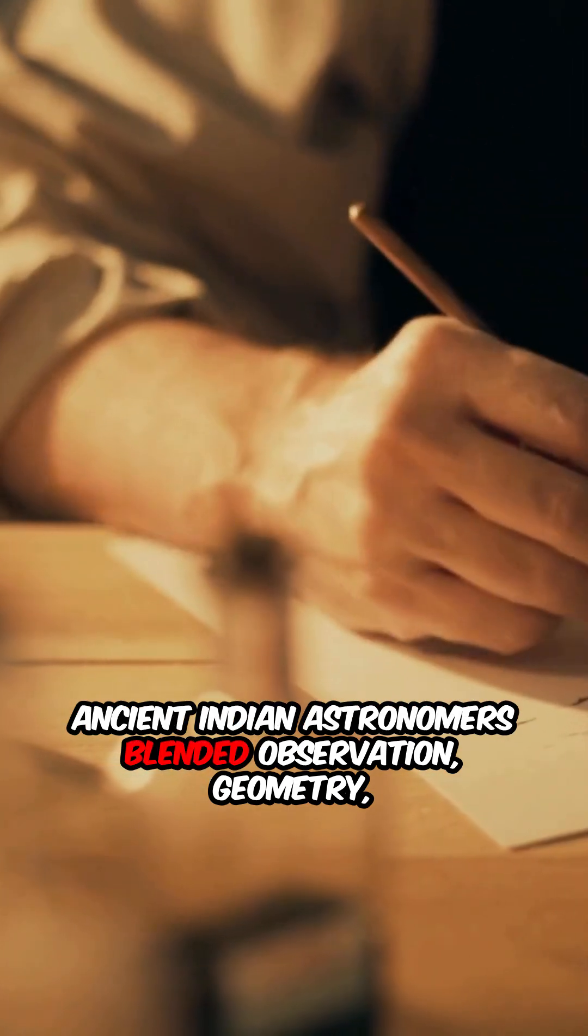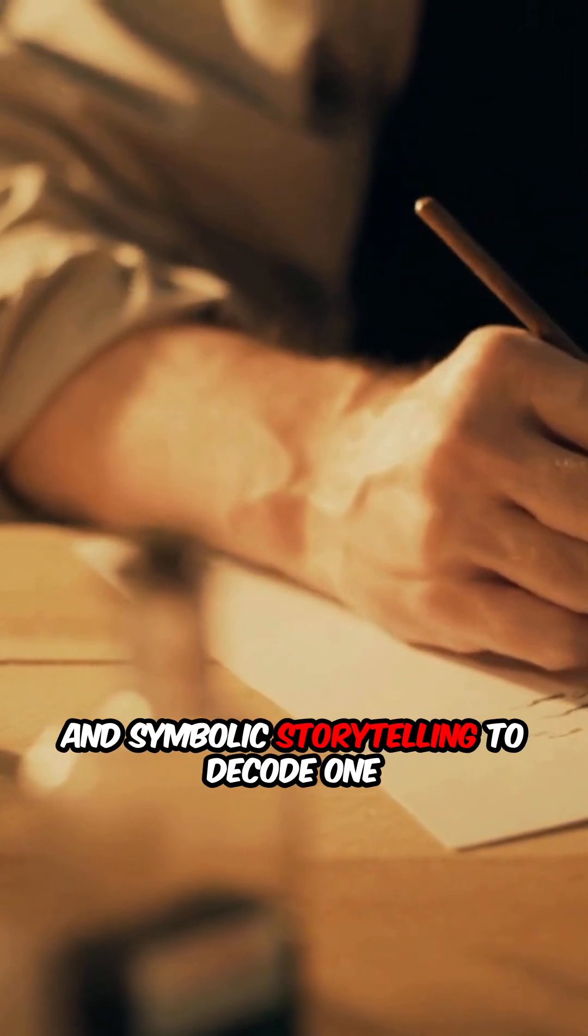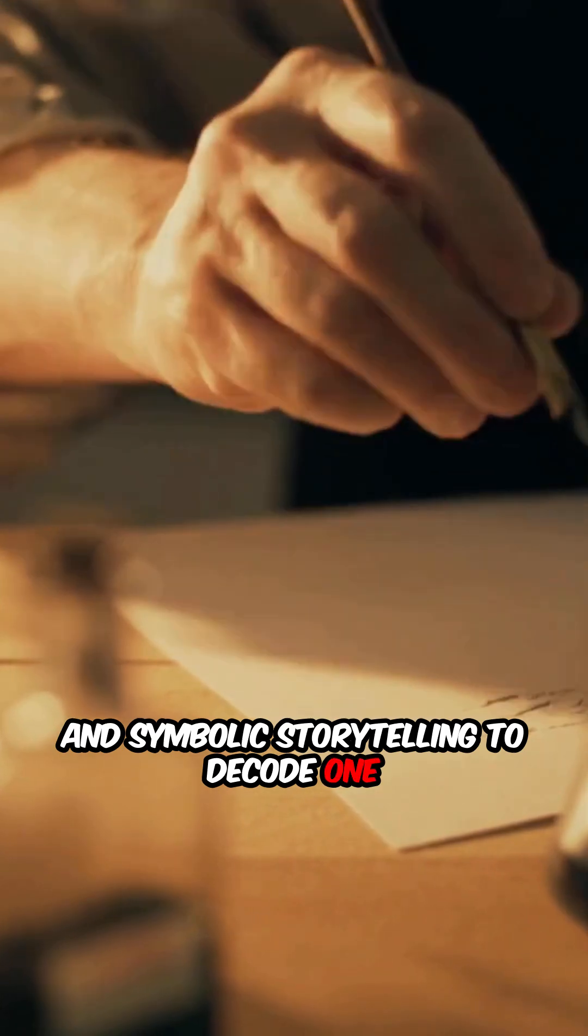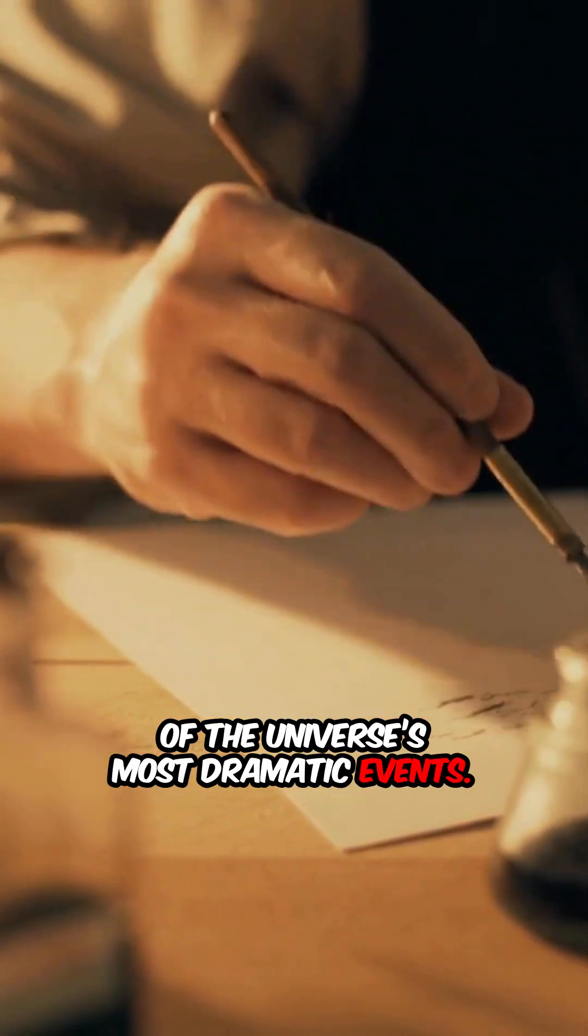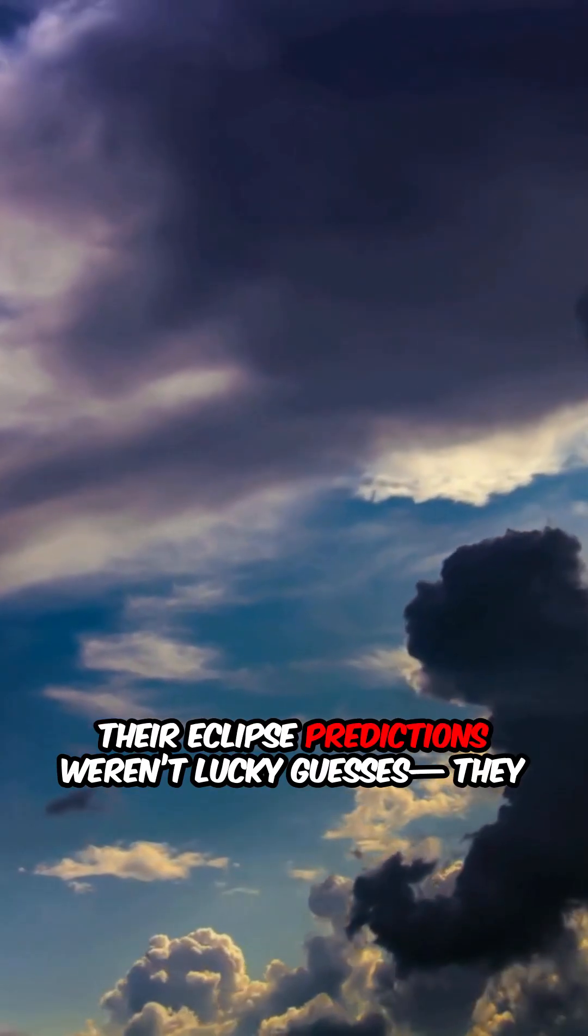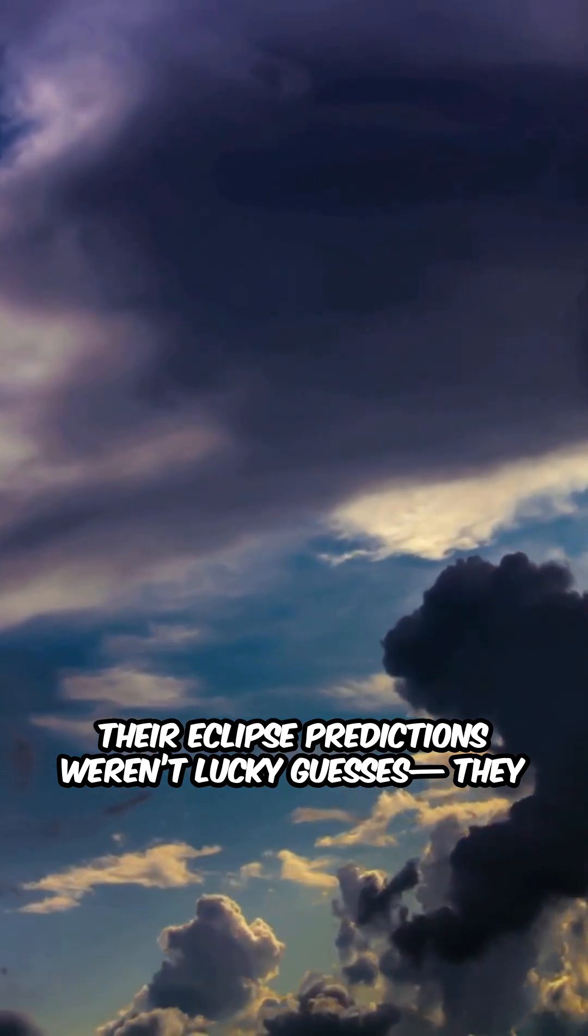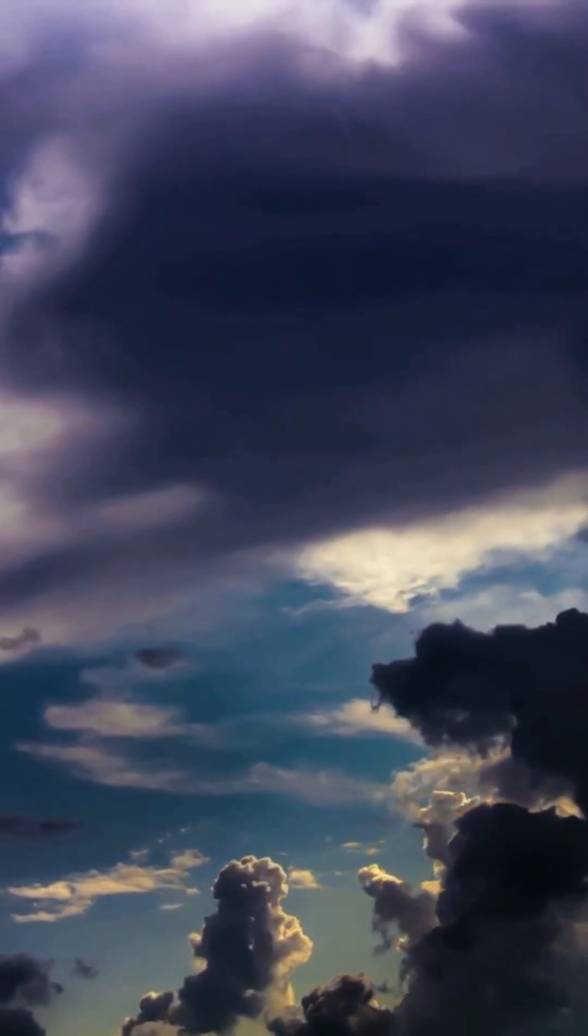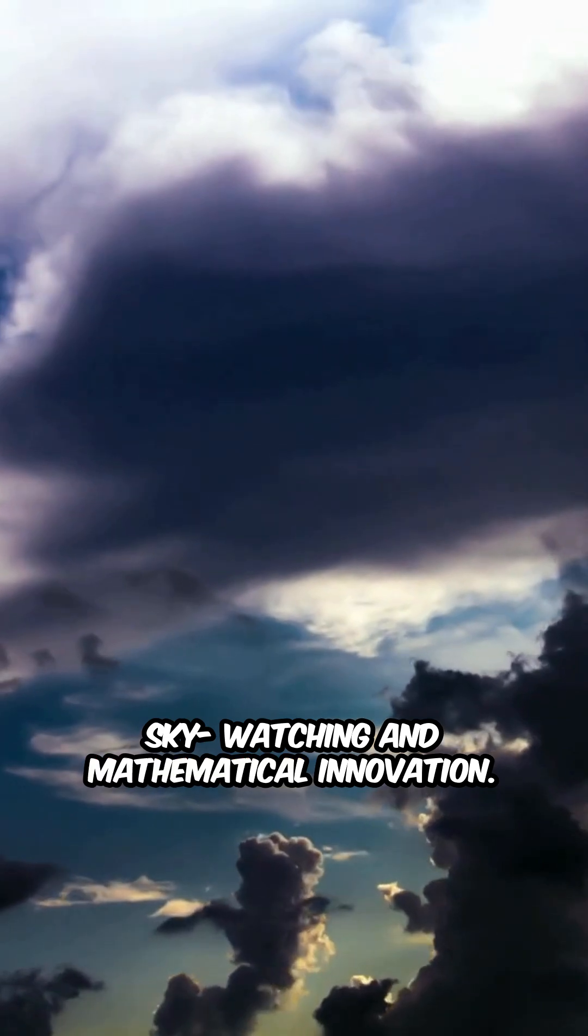Ancient Indian astronomers blended observation, geometry, and symbolic storytelling to decode one of the universe's most dramatic events. Their eclipse predictions weren't lucky guesses. They were the product of centuries of disciplined sky watching and mathematical innovation.